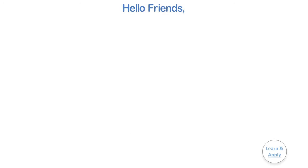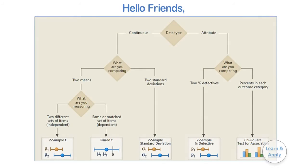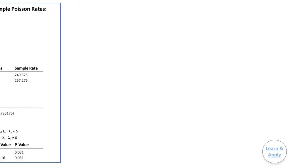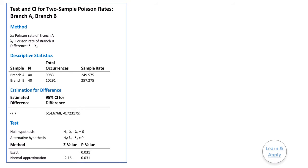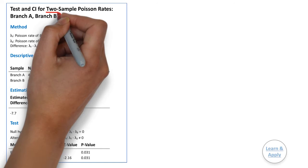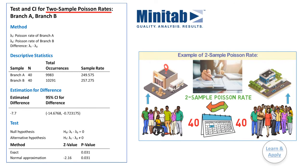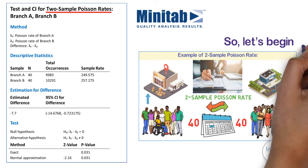Hello friends, in the last video, we had seen one of the most important hypothesis tests, the chi-square test for association in Minitab software with the help of a practical example. In this video, we are going to learn another two-sample hypothesis test, the two-sample Poisson rate in Minitab software with the help of a practical example for easy understanding and better clarity. So, let's begin.